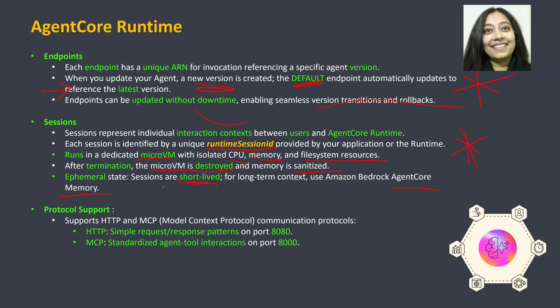What protocols does AgentCore runtime support? There are two: HTTP and MCP. You can use HTTP for simple request-response patterns — HTTP runs on port 8080. If you have standardized agent-tool interactions, you'll create an MCP server, which runs on port 8000. These port numbers are very important for the lab, so remember them.